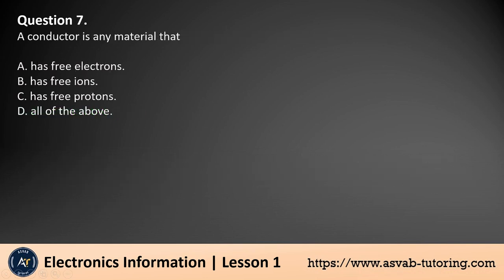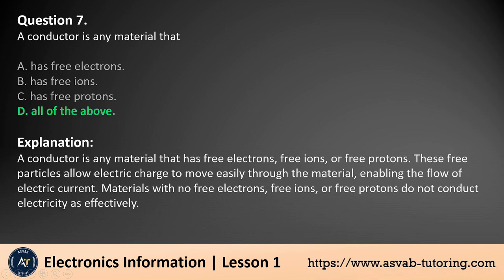Question 7. A conductor is any material that: a. Has free electrons, b. Has free ions, c. Has free protons, d. All of the above. The answer is d. A conductor is any material that has free electrons, free ions, or free protons. These free particles allow electric charge to move easily through the material, enabling the flow of electric current. Materials with no free electrons, free ions, or free protons do not conduct electricity as effectively.